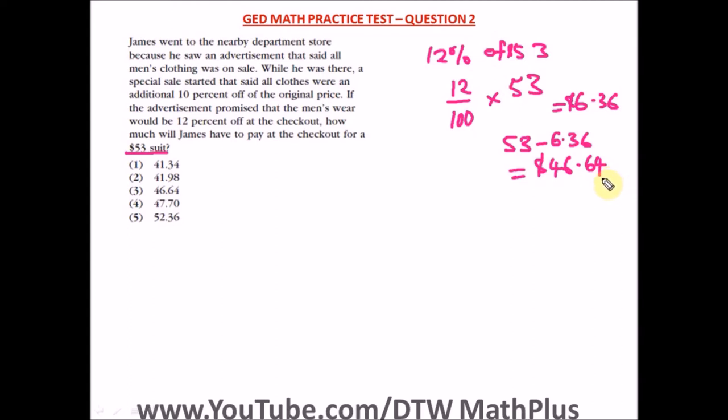This $46.64 is the price to pay at checkout if there were no other sales. But while he was there, a special sale started that said all clothes were an additional 10% off the original price — meaning off the checkout price after the first discount. So $46.64 is now our new original price, and another 10% off is applied to that amount.